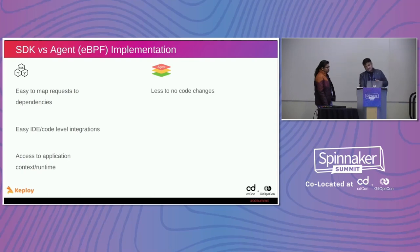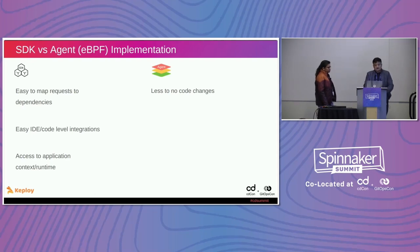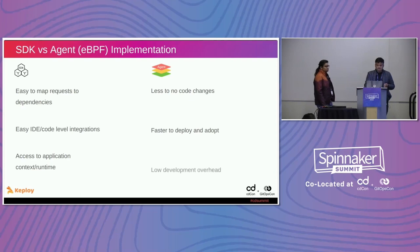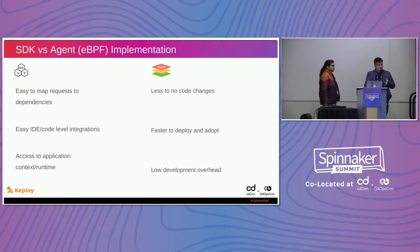On the agent side with eBPF, there are little to no code changes on the host application, so it's easier to integrate. It's faster to deploy and adopt because you don't have to have code changes done throughout the application. And there's low development overhead for maintainers like us because we don't have to support every language, every driver or library, every version — it's a lot easier supporting it at the network protocol level.